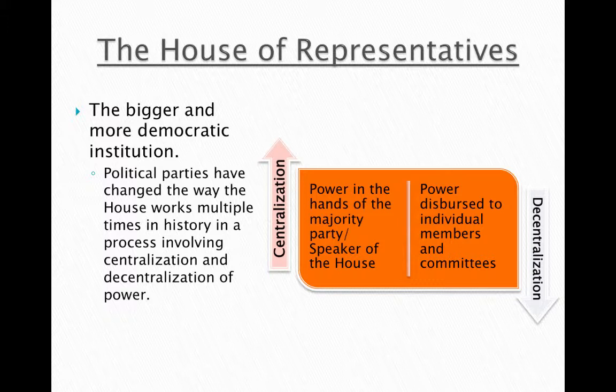The House of Representatives is the bigger and more democratic institution — there are more members and it represents people more evenly in general. But the political parties in the House, and we do have a two-party system, have changed the way the House works multiple times in history until we get what we have today, and that functions based on the centralization and decentralization of power.